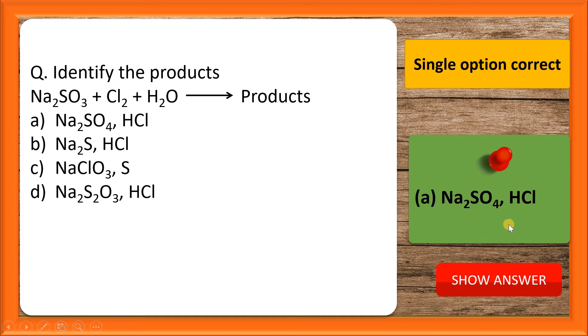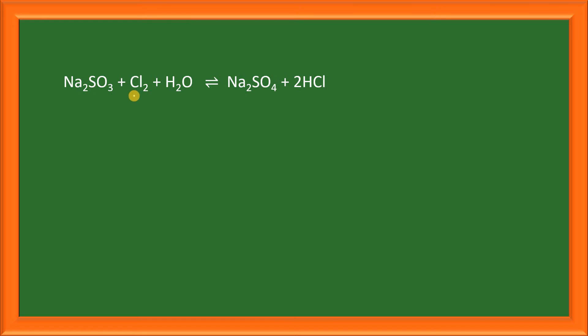Let us see the detailed solution for this question. This is the reaction of Na2SO3 plus Cl2 plus water. Cl2 is having 0 oxidation state here. Here this oxygen is having -2 oxidation state, Na is +1. So sulfur will have +4 oxidation state.